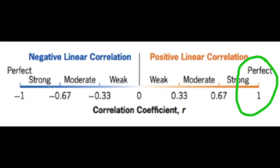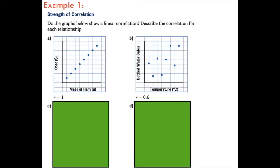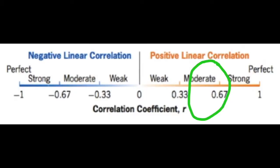If you go back to our scale here, we have a correlation coefficient of one - this is a perfect linear correlation. We're looking at bottled water sales and temperature. As temperature increases, the water sales also increase. However, the trend isn't as obvious as our first example, so the correlation coefficient is 0.6. Looking back at our scale, we would say this is a moderate positive linear correlation.